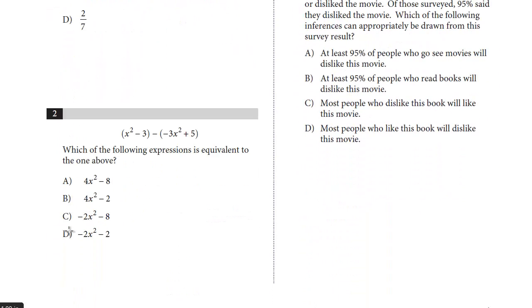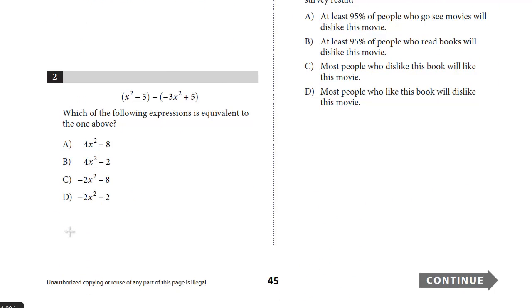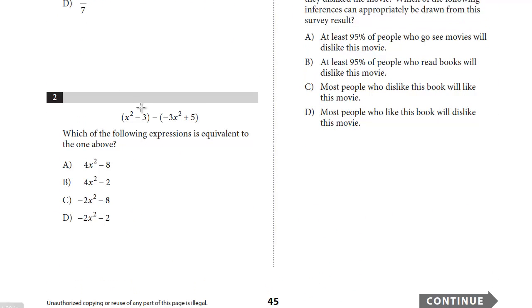Let's take a look at number 2. Which of the following expressions is equivalent to the one above? And so here we're just going to rewrite this as x squared minus 3. We're going to distribute the negative sign. We get plus 3x squared minus 5. And now I just combine the terms. We have an x squared plus a 3x squared. We get 4x squared minus 3 minus 5. We get minus 8. And that's it. The answer is A.